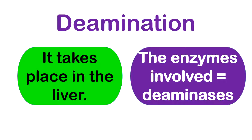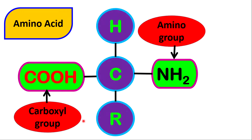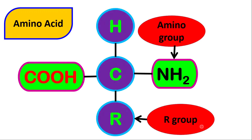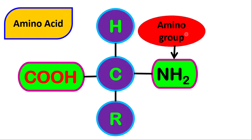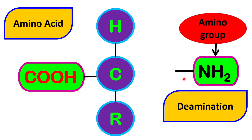To truly understand the process of deamination, I need to illustrate something. Amino acids have three parts: there is a carboxyl group, which is the acidic part of the amino acid; an R group, which is a carbon chain; and an amino group, which is the very important part for this lesson. Within the word deamination, 'de' refers to the removal — so what you are removing is an amino group. Once the amino group is removed, it is essential to start the process of deamination.